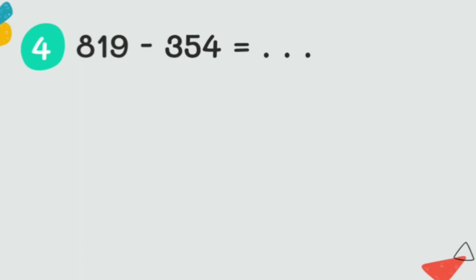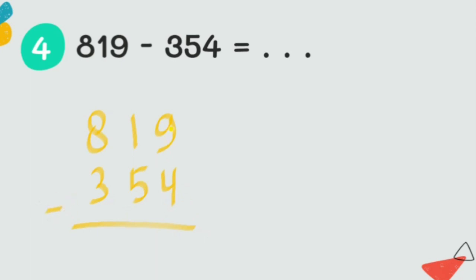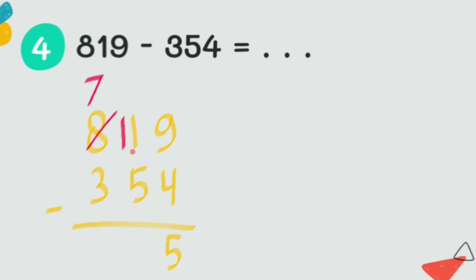Now we move to the last example: eight hundred ninety minus three hundred fifty-four. Nine minus four equals five. Then one minus five — we cannot do that, so we take from the hundreds. Hundreds becomes seven, and tens becomes eleven, because ten plus one equals eleven. Eleven minus five equals six, and seven minus three equals four. The answer is four hundred sixty-five.